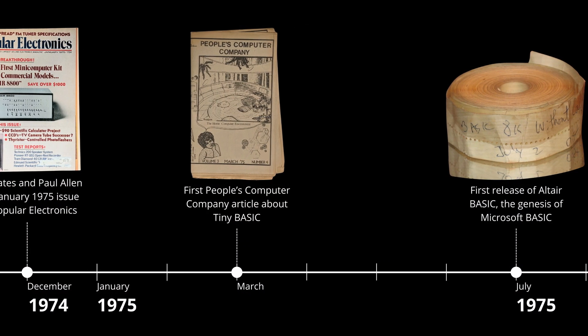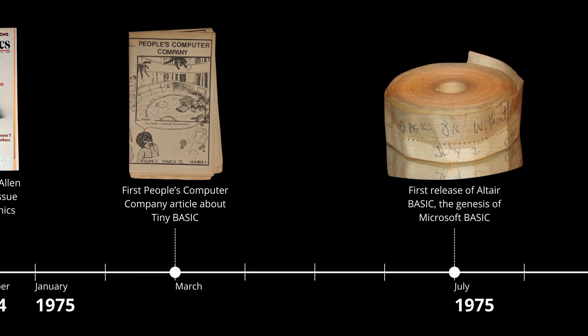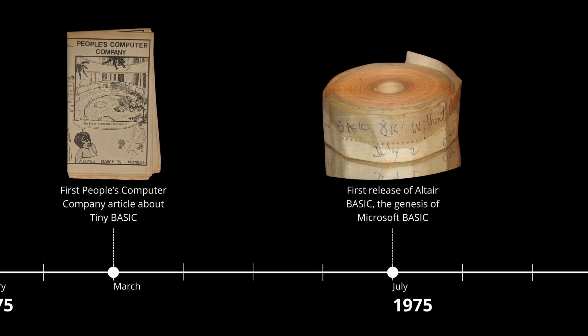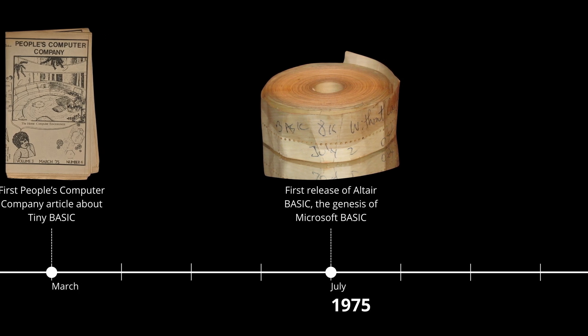Suddenly, the Altair wasn't just a box of blinking lights and toggle switches — it was a programmable computer. So the Altair 8800 and Microsoft BASIC provided the initial spark for the home computer revolution. But a spark needs fuel to become a fire. That fuel arrived two years later, in 1977, with the release of three machines that took the idea of a personal computer and made it a reality for a much wider audience.